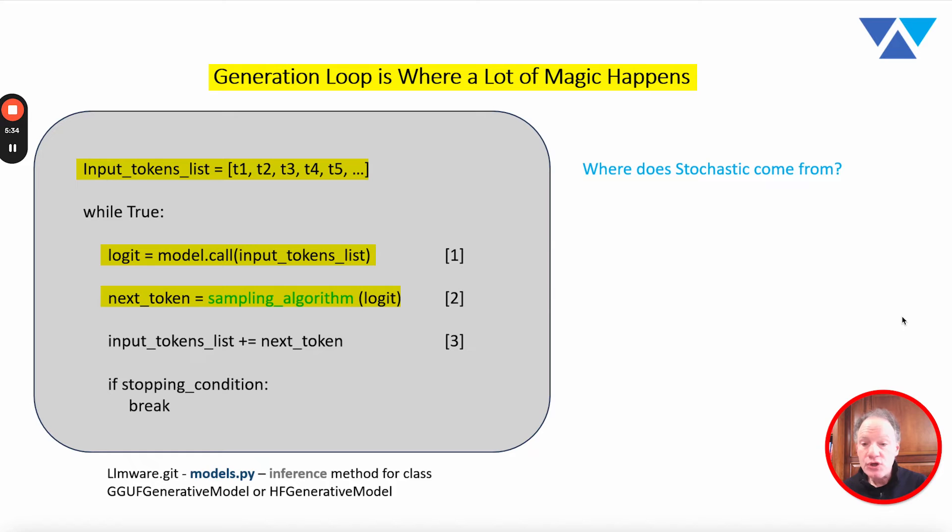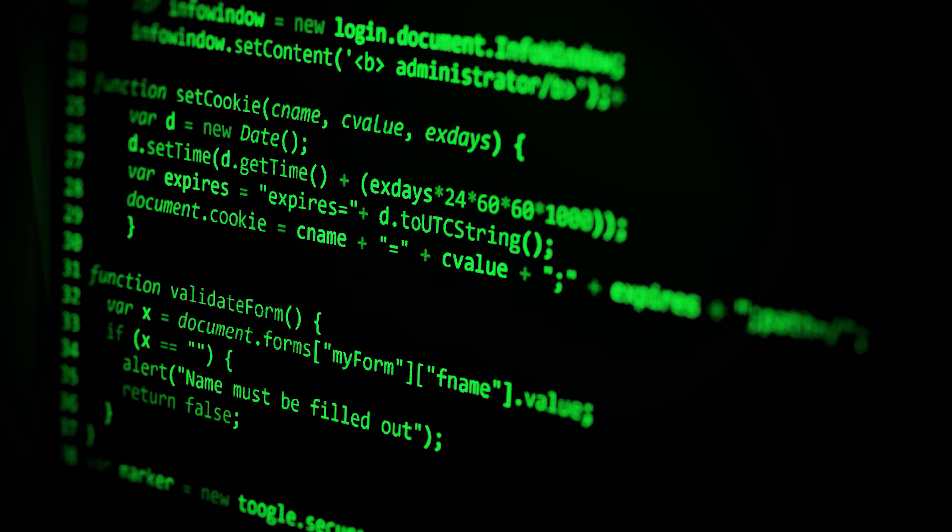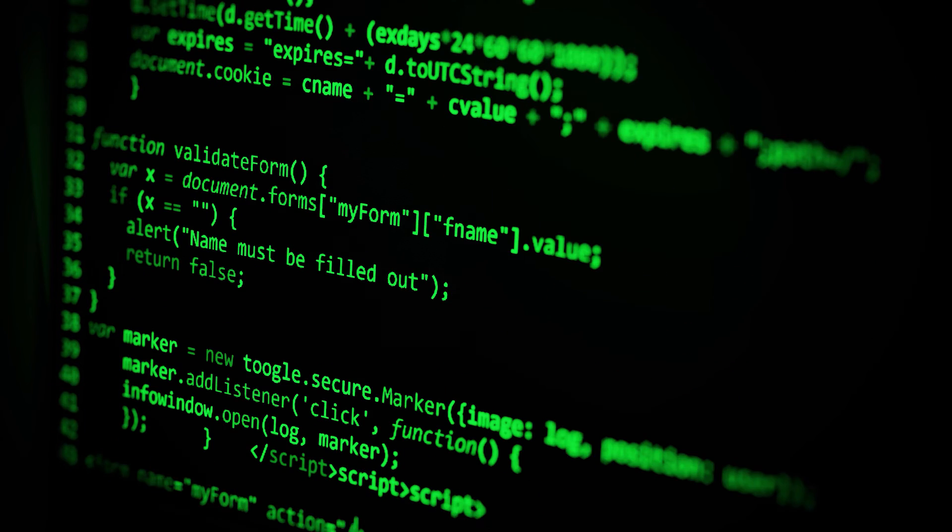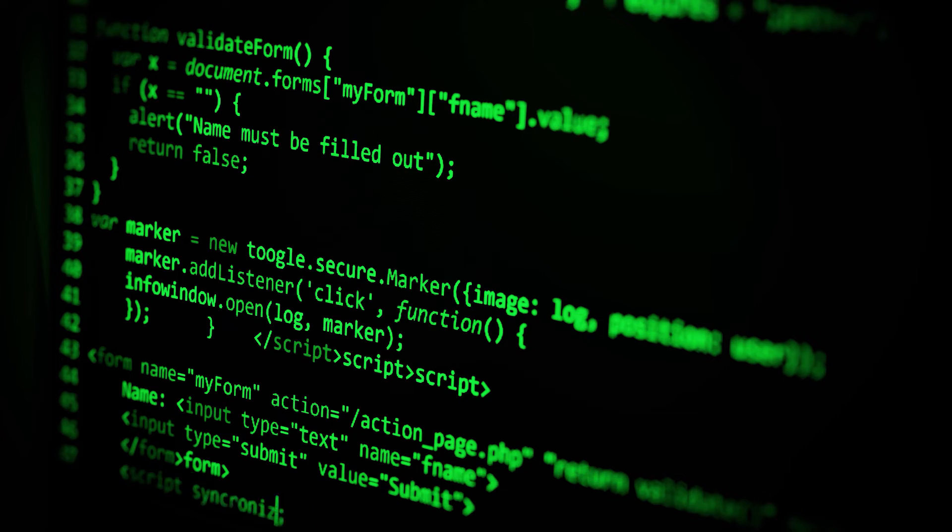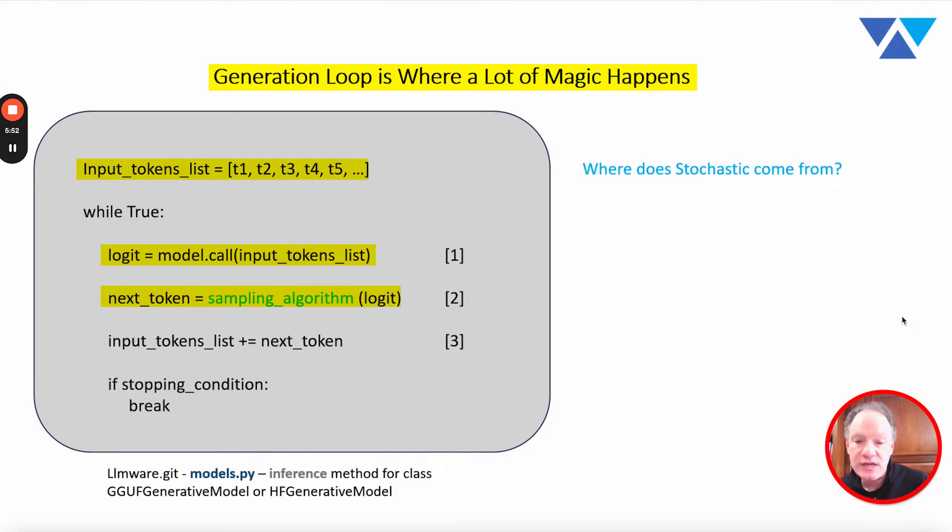Step two, then, you're going to take that logit, that array, that probability distribution, and you're going to pass it into some type of sampling algorithm. This is where all the top P and top K and temperature and repetition penalties and other filters and grammars and constraints and logit biases, all sorts of things that you may want to add into that probability distribution to ultimately select one token out of that probability distribution that you received from the model. That's step two.